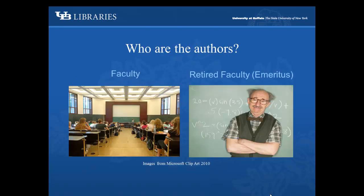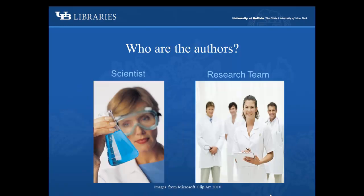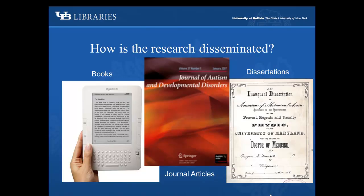Authors of academic writing include university professors or retired faculty. They can also be scientists or research teams. Academic scholarship is disseminated many ways. Books, journal articles, and dissertations are three common venues.